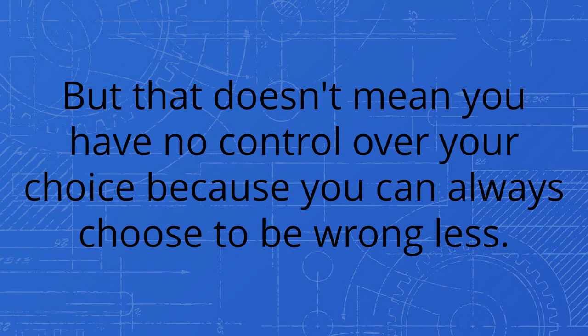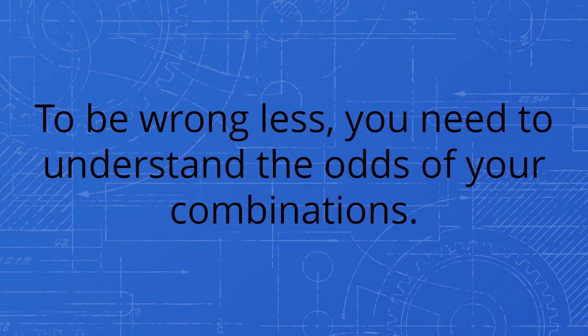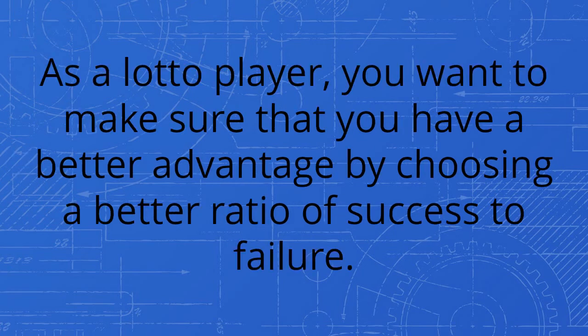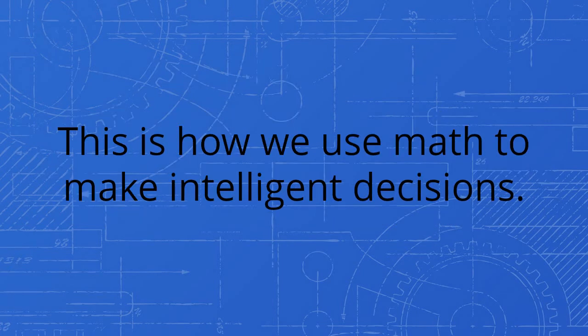But that doesn't mean you have no control over your choice because you can always choose to be wrong less. To be wrong less, you need to understand the odds of your combinations. When we talk about odds, we're talking about the ratio of success to failure. As a lotto player, you want to make sure that you have a better advantage by choosing a better ratio of success to failure. This is how we use math to make intelligent decisions.